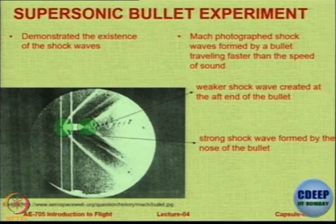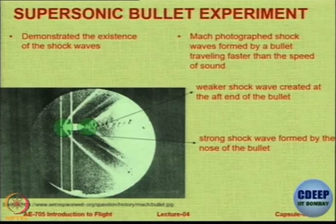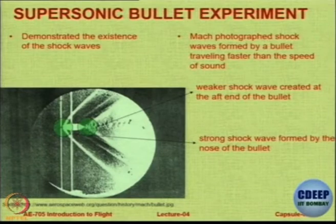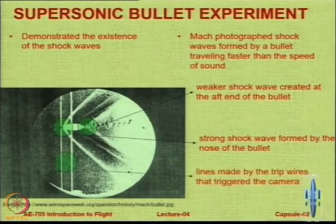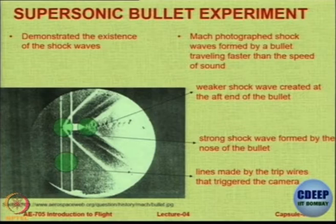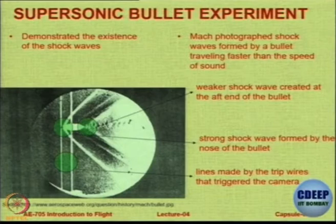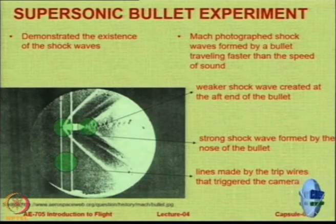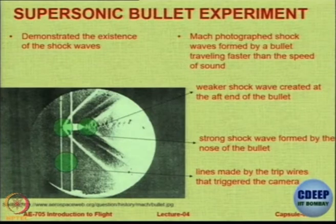Those of you who study aerodynamics in the courses that follow, especially high speed aerodynamics, are going to study about the phenomena of strong shock waves, bow waves, weak waves, Mach waves, et cetera. Those two vertical lines are not anything physical — these are lines made by the trip wires that triggered the camera which was used by Mach to record this photograph. So we should ignore those two vertical lines. Many people have a wrong idea that it is a vertical shock — it is not a shock, not a normal shock, it is just the lines made by the trip wire.